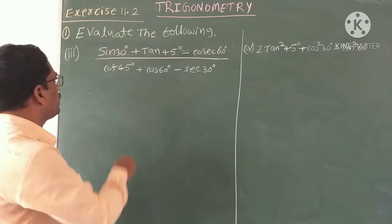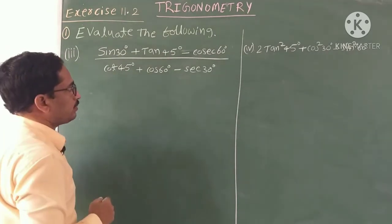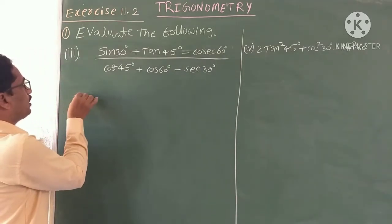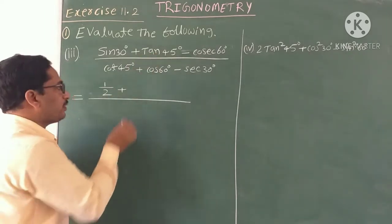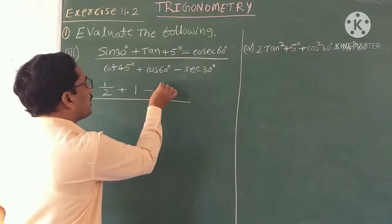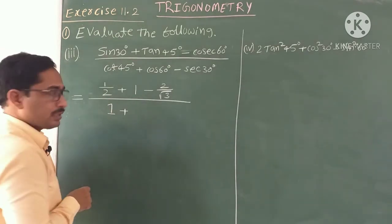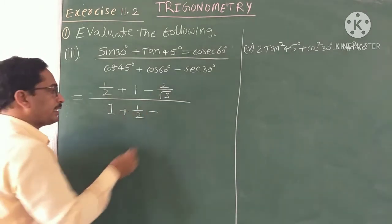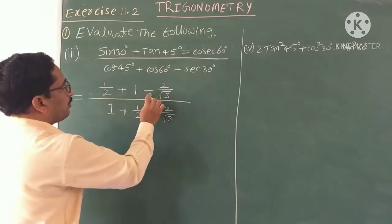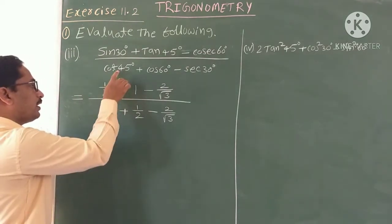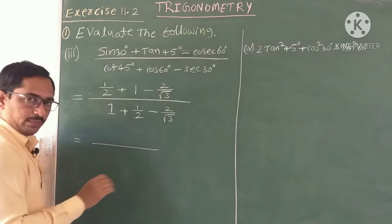Now the third problem: (sin 30° + tan 45° − cosec 60°) divided by (cot 45° + cos 60° − sec 30°). Substitute the values one by one. Sin 30 = 1/2, tan 45 = 1, cosec 60 = 2 by root 3, cot 45 = 1, cos 60 = 1/2, sec 30 = 2 by root 3. Now rearranging the denominator terms, interchanging 1 and 1/2.